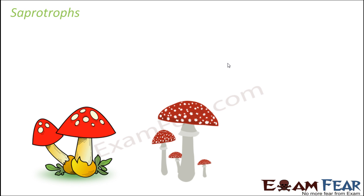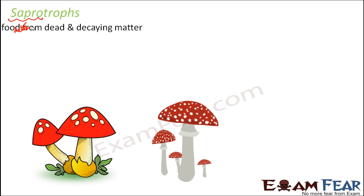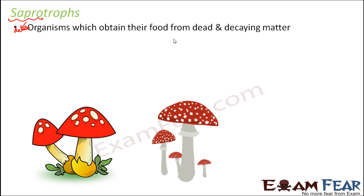What does the word 'sapro' mean? Sapro means something which is dead or decayed — anything dead and decayed. These organisms obtain their food from dead and decaying organisms, so the dead bodies are being eaten by these saprotrophs.